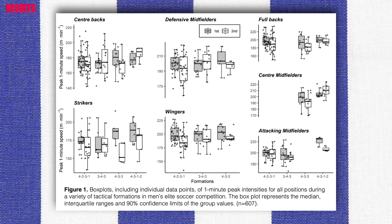Attacking midfielders also had greater first half outputs for all moving averages compared to the second half in the 4-3-1-2 formation. In the 4-3-1-2 formation, the first half peak intensity for strikers was greater than both the 3-4-3 and 4-2-3-1 formations. Center backs and attacking midfielders also had greater peak intensities across all first half averages compared to the 3-4-3 formation.